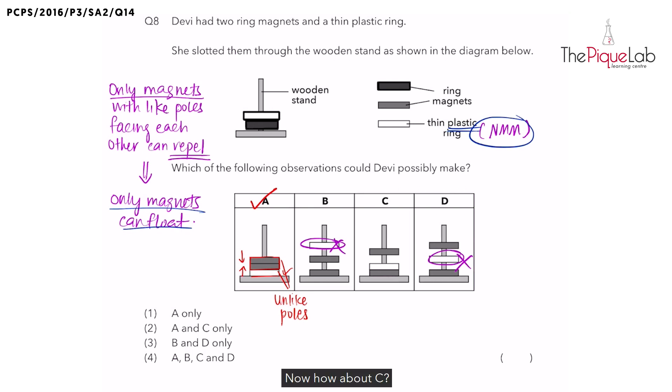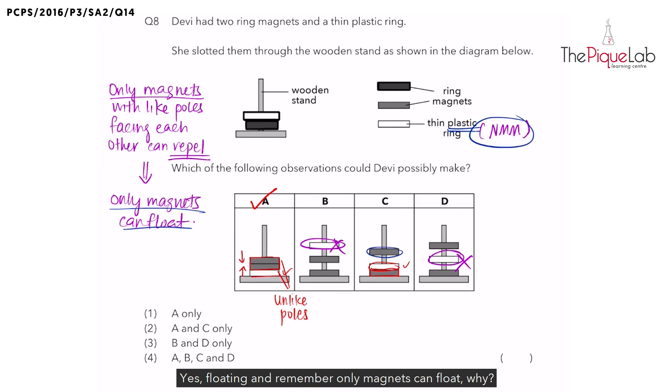Now, how about C? We have a magnet on top of the platform and we have a plastic ring on top of that magnet. The plastic is not floating, so that's fine. But if you look at the other magnet, what is it doing? Yes, floating. And remember, only magnets can float. Why? Because only magnets with like poles facing each other can repel, causing it to float. But some students think this option is wrong because they think, hey, how come the magnet is repelling the plastic? And they assume, nope, this is not possible. And they cross this out too.